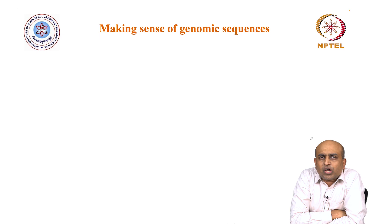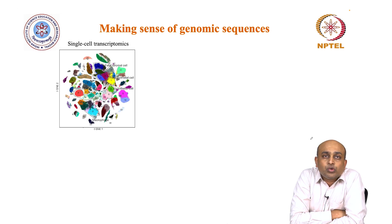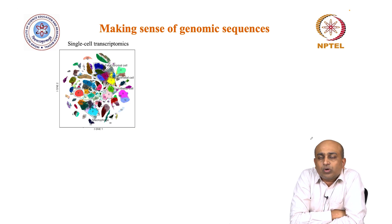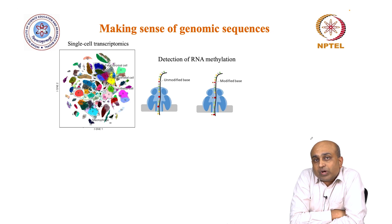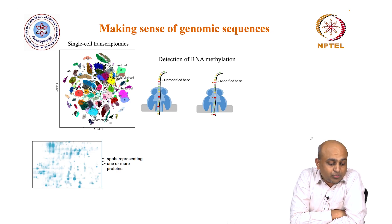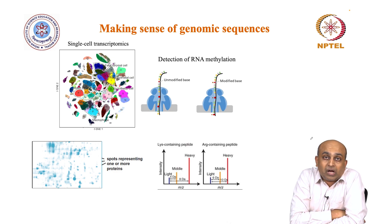Subsequently, we will look at how we make sense of all these genomic sequences assembled through various assays — transcriptomics, proteomics, metabolomics, and other different assays. We will look at single-cell transcriptomics and detection of RNA methylation at the same time as sequencing is done. We will also see how you can identify proteins by running gels, separating out proteins, doing high-throughput proteomics, and looking at differential abundance of proteins.